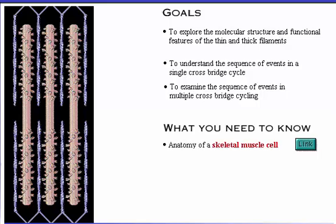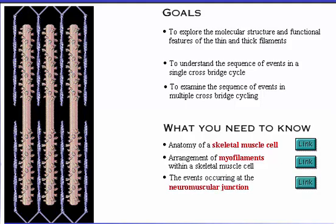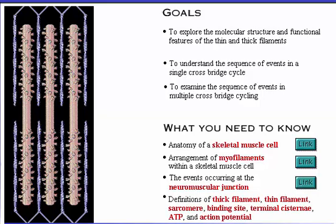Here is what you need to know: the anatomy of a skeletal muscle cell, the arrangement of myofilaments within a skeletal muscle cell, the events occurring at the neuromuscular junction, and definitions of thick filament, thin filament, sarcomere, binding site, terminal cisternae, ATP, and action potential.